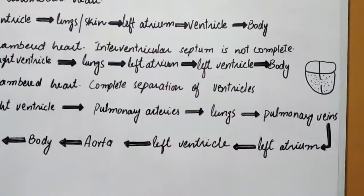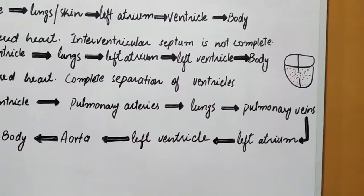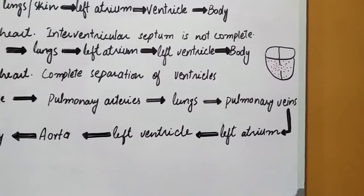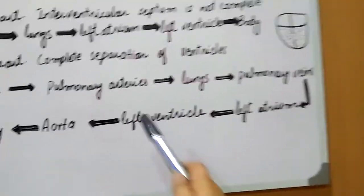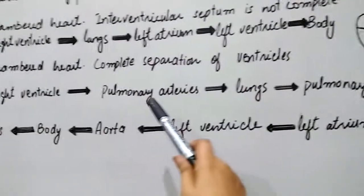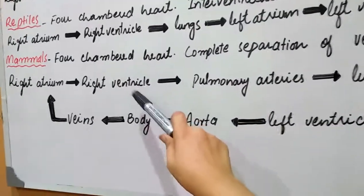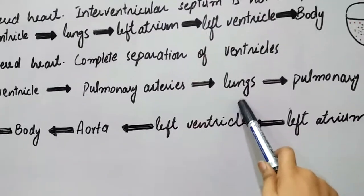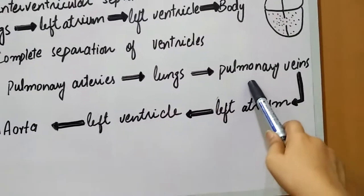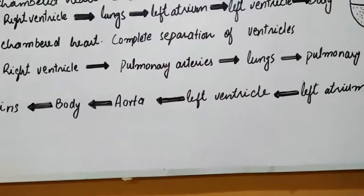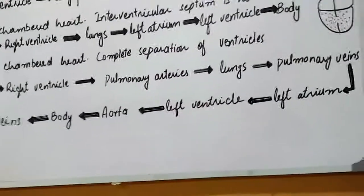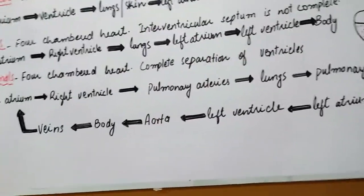From the right ventricle, blood goes towards the lungs through the pulmonary arteries, and after oxygenation, blood through pulmonary veins enters the left atrium. This constitutes the pulmonary circulation: blood from the right ventricle through pulmonary arteries enters the lungs, and from the lungs after oxygenation it goes through pulmonary veins into the left atrium.